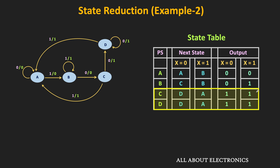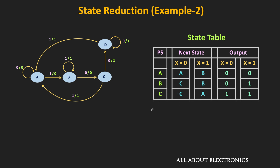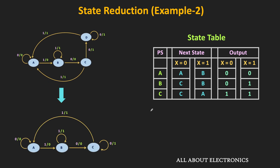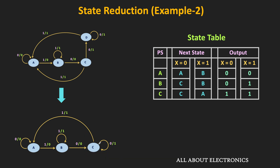That means we can remove one of them. Here we are going to remove the D state. In place of D, we will write C. Based on this new state table, let us draw the reduced state diagram. This is the reduced state diagram after the state reduction. As you can see, the D state and its corresponding output transitions have been removed. All the incoming transitions to the D state will now go to the C state. The transition from C to D will now go to C itself. This is the reduced state diagram after the state reduction.